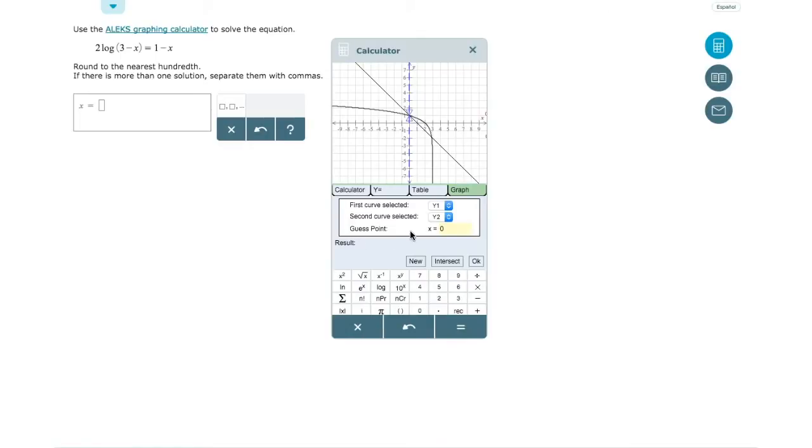Next it asks for a guess point. This means we want to see around where the points intersect. As you can see, there's one around x equals 3, so we will put this as our guess point. Then you will click the intersect button. It looks like we get 2.886 comma negative 1.886. Exactly. Since we are just trying to find the x value, our answer will be 2.886.